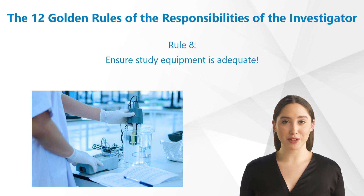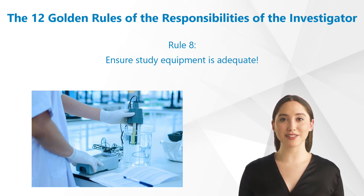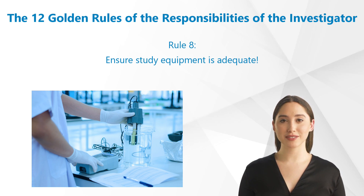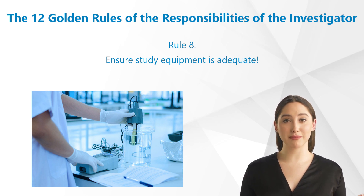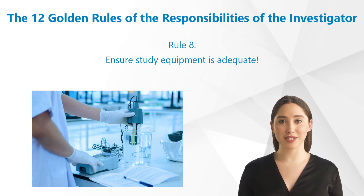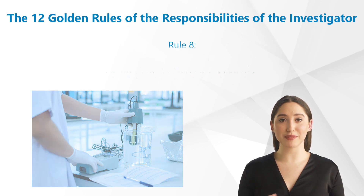Rule 8: Ensure study equipment is adequate. The necessary facilities and equipment vary depending on the study. In simple studies, this may only include a fridge, a centimeter tape measure, a scale, and perhaps also a centrifuge. The investigator has to check prior to the study that the study equipment meets the sponsor's requirements.